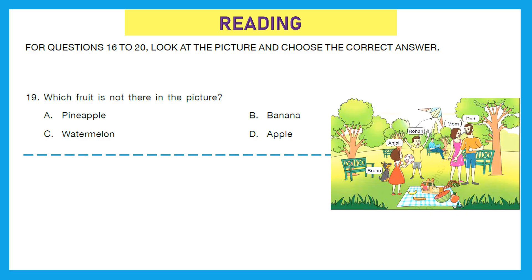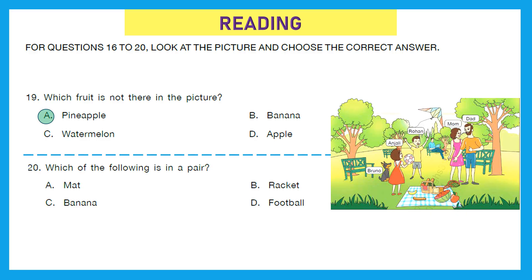Question 19: which fruit is not there in the picture? We can see an apple, a watermelon, and a banana, but we cannot see a pineapple anywhere. So option A, pineapple, is the fruit which is not there in the picture. Question 20: which of the following is in a pair? Pair means a set of two. We can see a pair of rackets in the picture. Option B is the right answer.